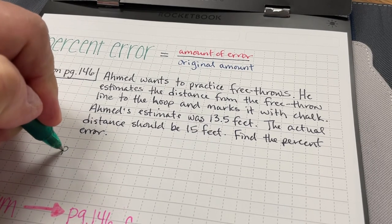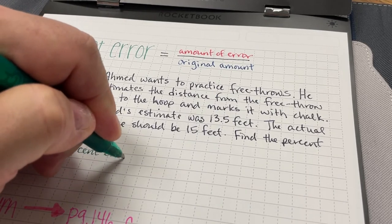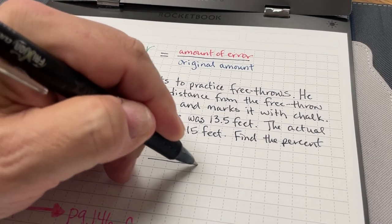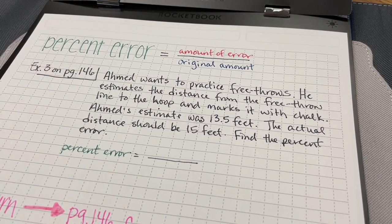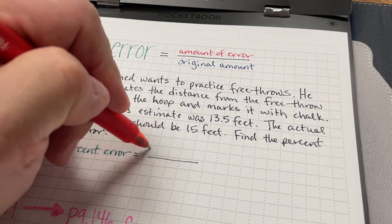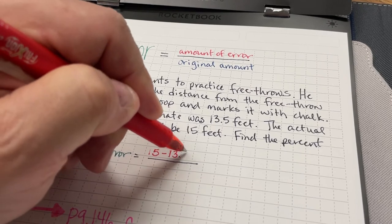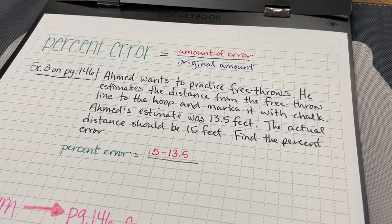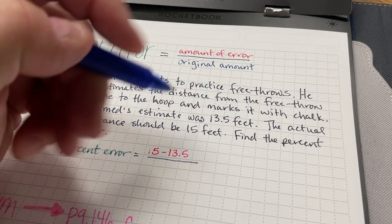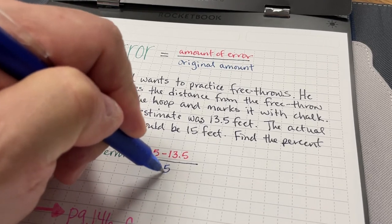So the percent error is going to equal the amount of the error. So what we're going to do is we're going to take the actual amount or the actual distance, and we're going to subtract his estimate. And then we're going to divide that by the original amount, or in this case, the actual distance from the free throw line. So 15 feet.